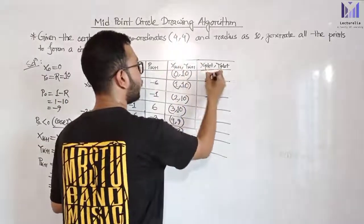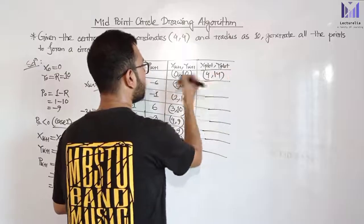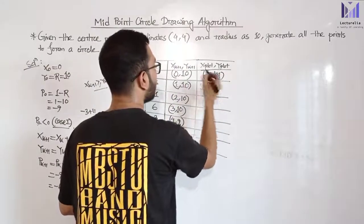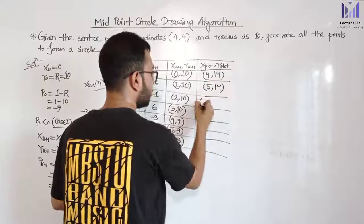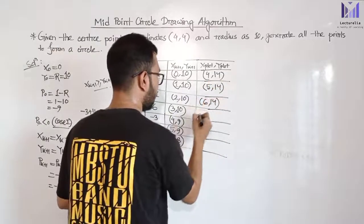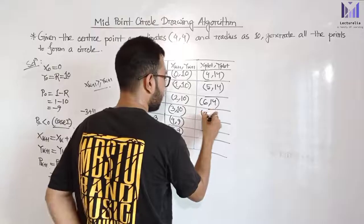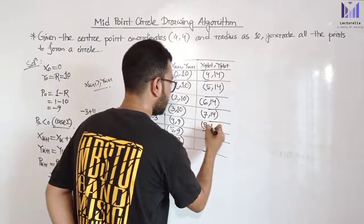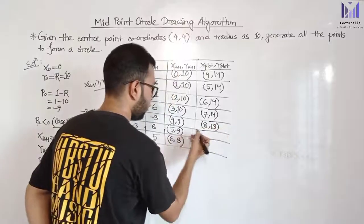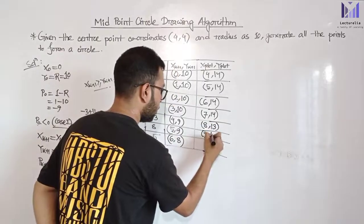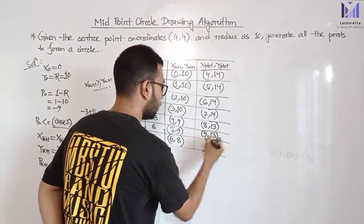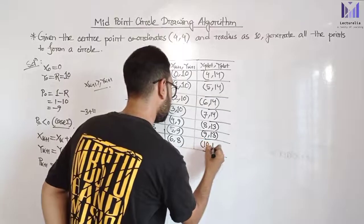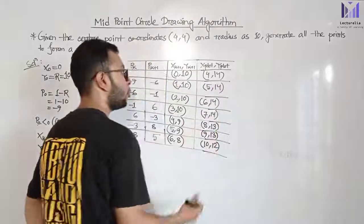The Q1 coordinates generated are: (4,14), (1+4=5, 14), (6, 14), (7, 14), (8, 13), (9, 13), (10, 12). So we have xplot and yplot — that is the octant generated. We need to apply the symmetry property to get the remaining coordinates.